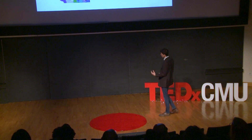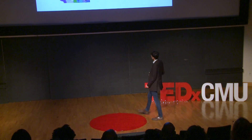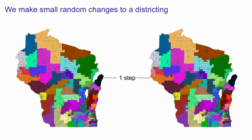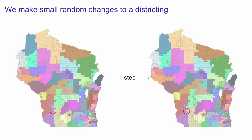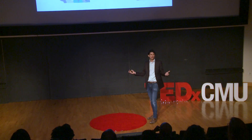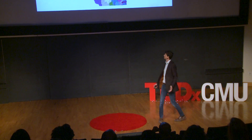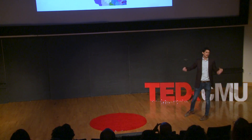To use randomness, we make small random changes to a districting. On the left you see the legislative districts of Wisconsin — the 99 districts. A small random change looks like this: I pick a little precinct on the boundary of two districts, check that switching it wouldn't disconnect a district or change population equality too much, and then make the change — it switches from one district to the next. We make random changes like this over and over again, something like hundreds of changes every second.